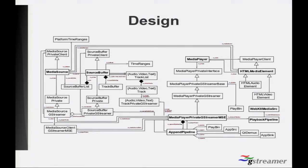On the other hand, we have the MediaSource class. The MediaSource class can have an auxiliary object, which is a SourceBufferList, which can hold several SourceBuffers, and each SourceBuffer can hold several TrackBuffers. Those TrackBuffers hold tracks in audio, video, or text track lists, which in turn hold audio, video, or text tracks.